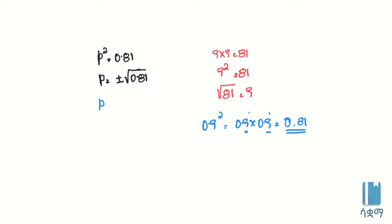P is equal to plus or minus square root of 0.09 squared. Here we can see 0.09 squared. This is equal to 0.09 squared. P is equal to plus or minus 0.09 squared.